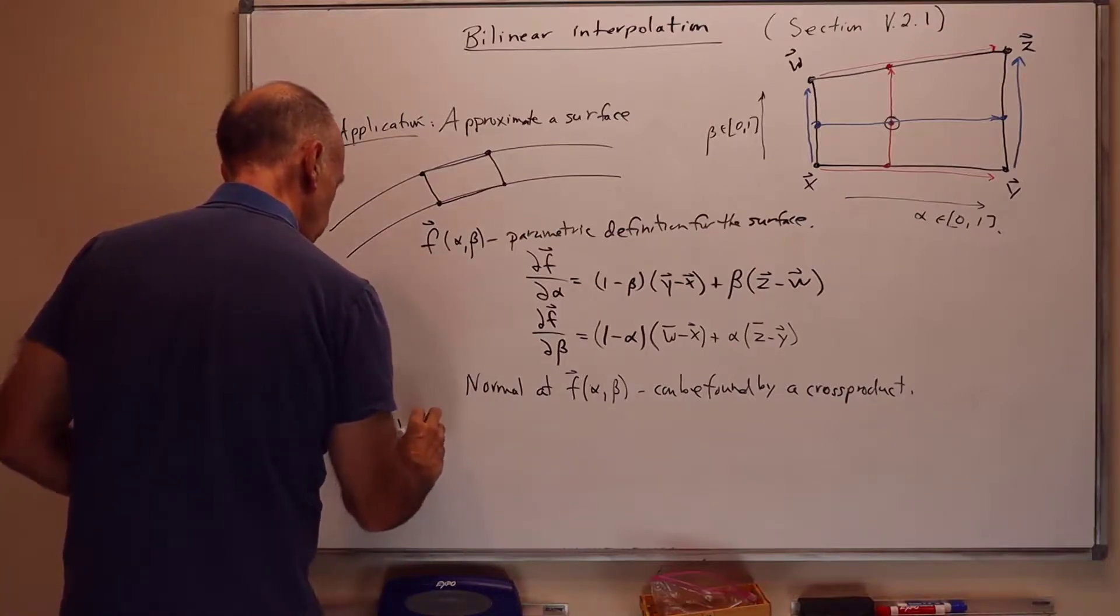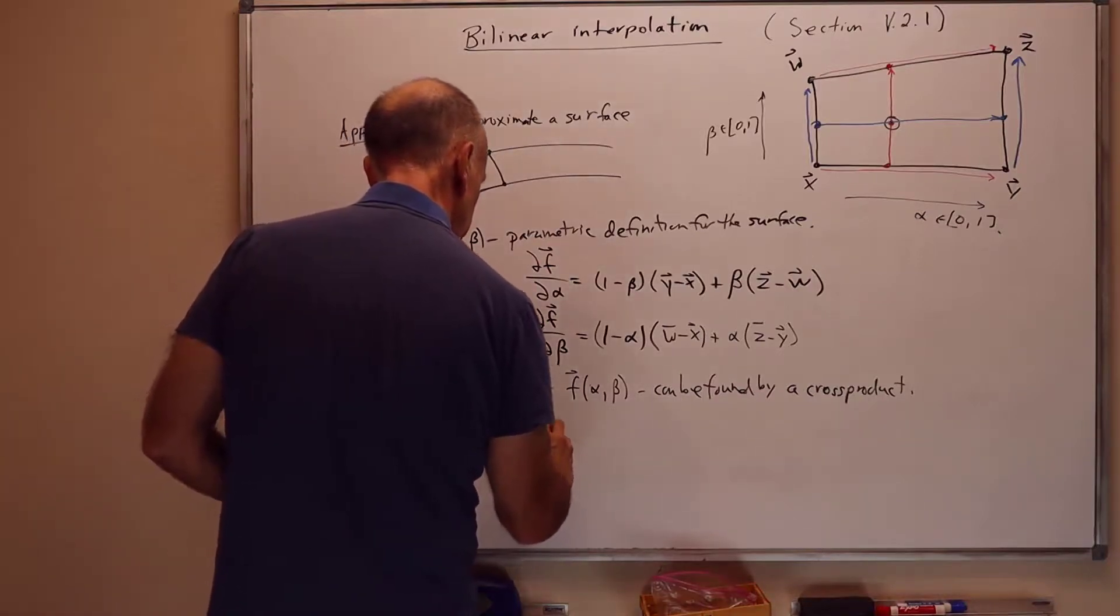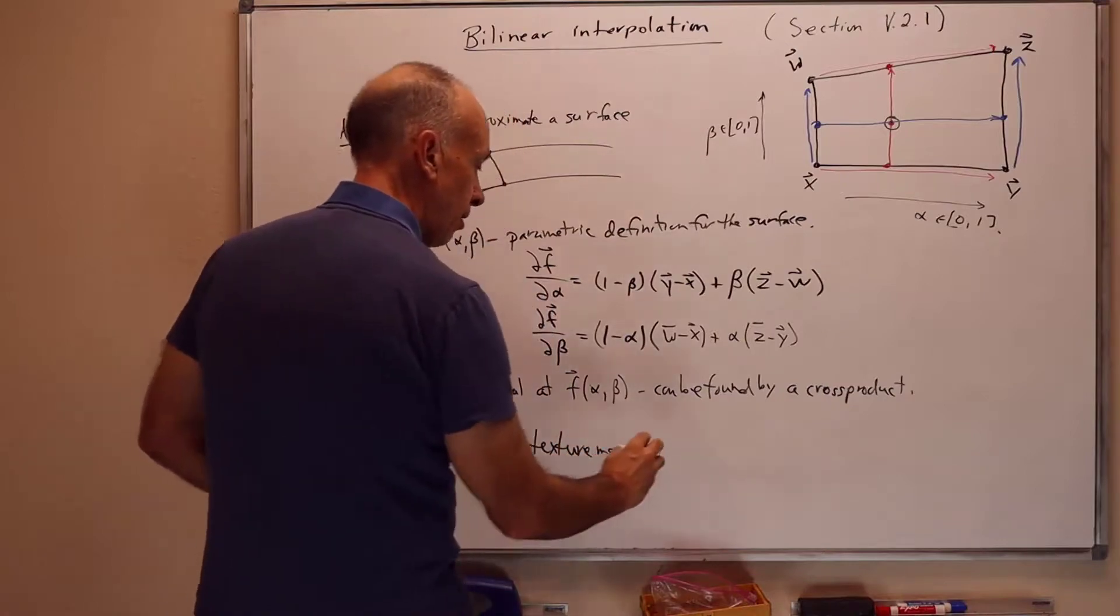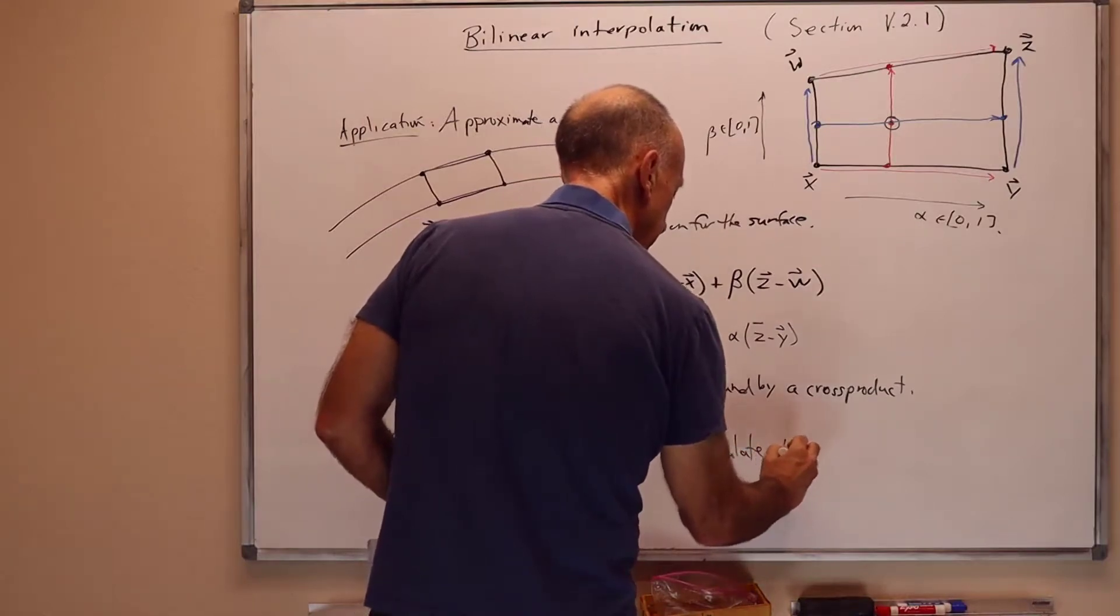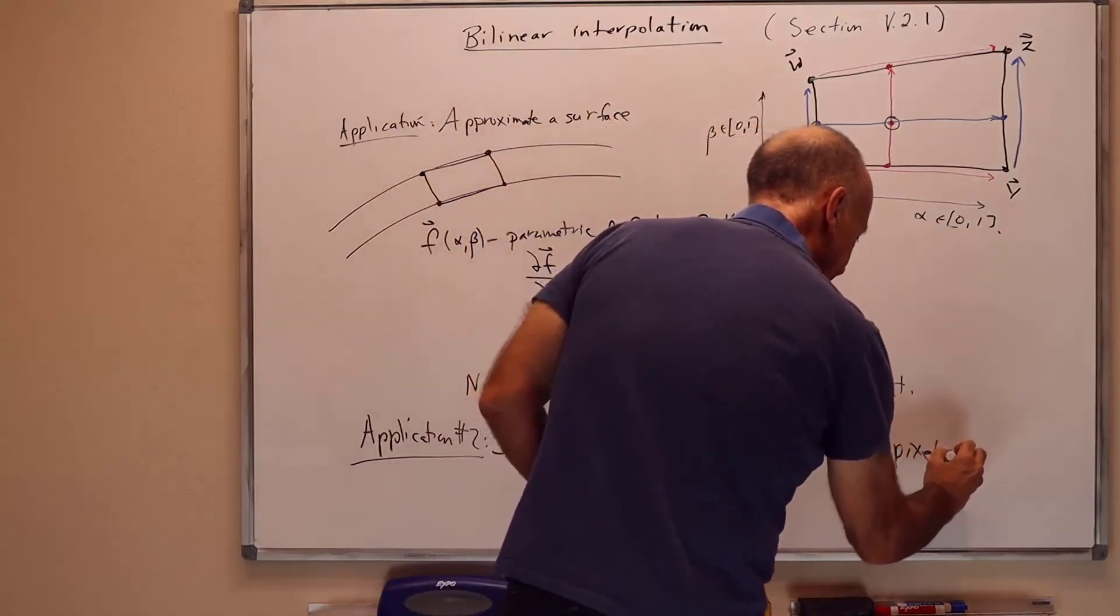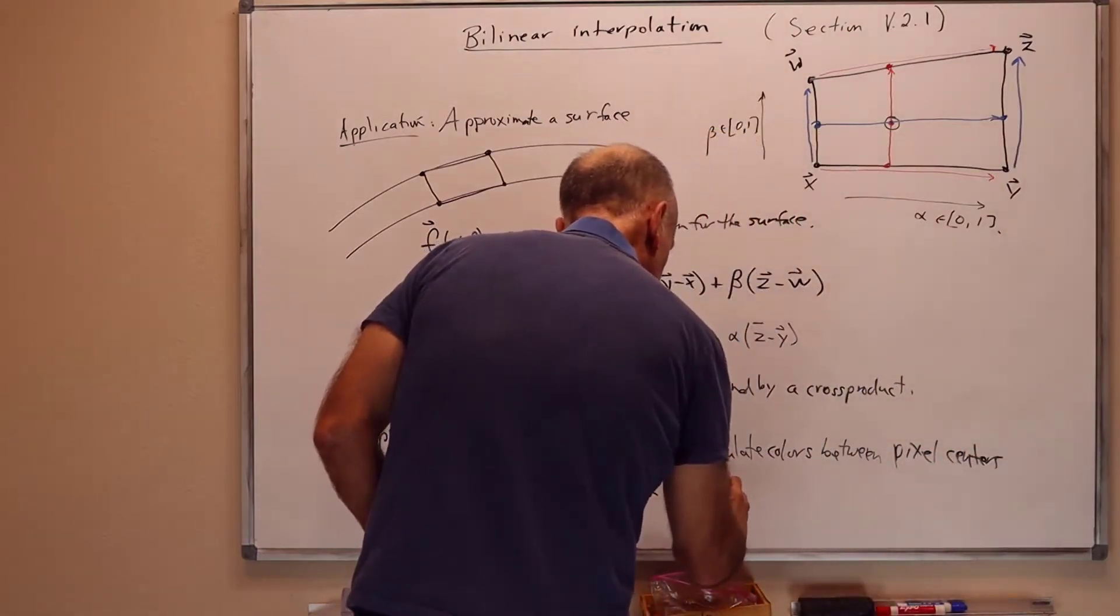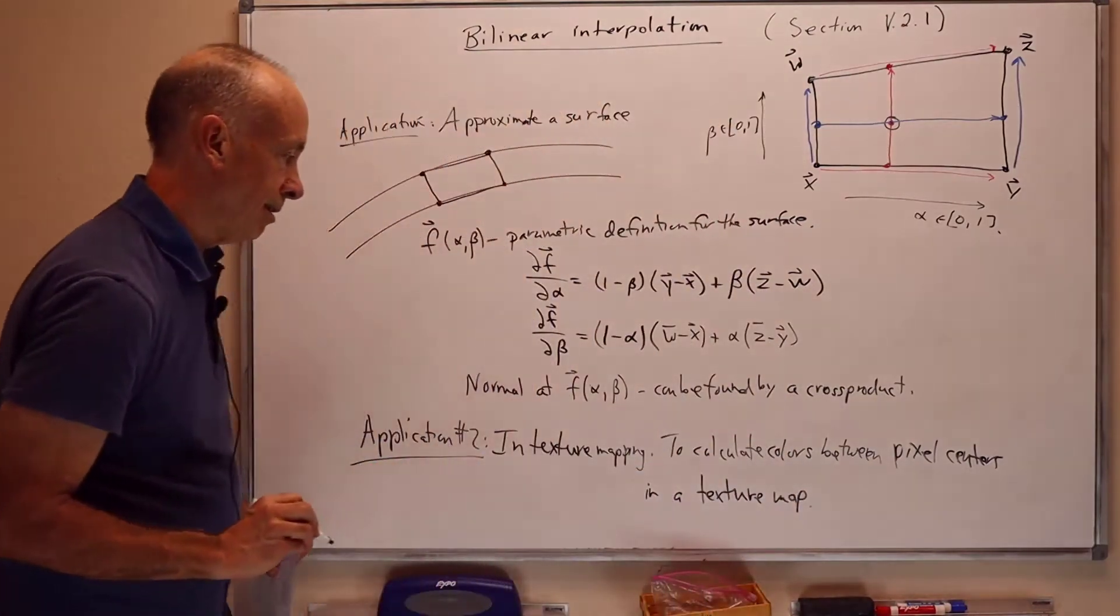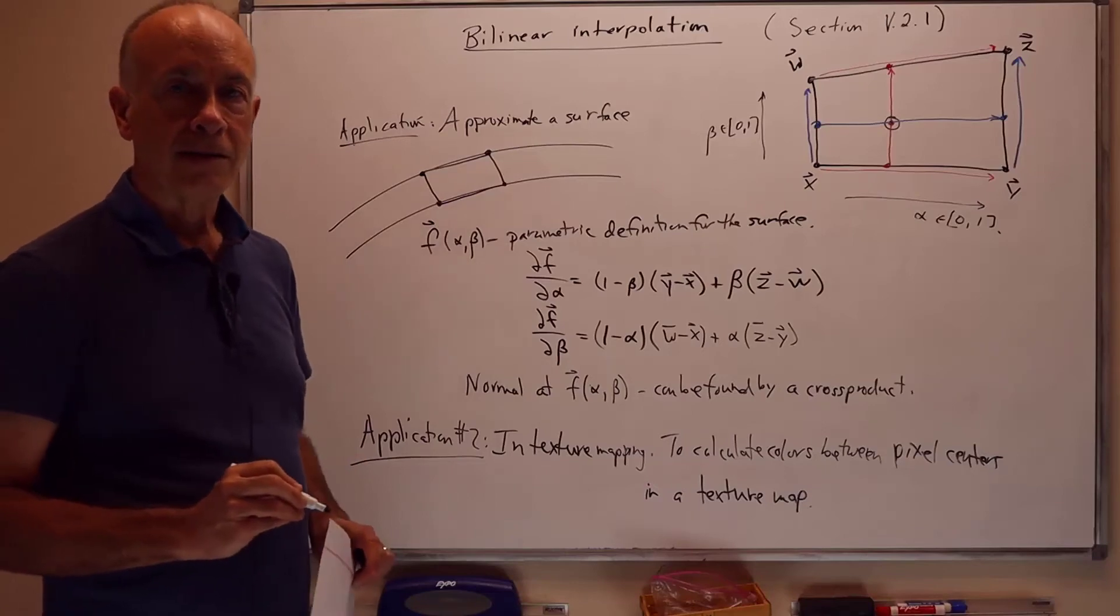Application number two comes up in texture mapping. And to calculate colors between pixels in a texture map. So between pixel centers in a texture map. So this is a thing that's built into OpenGL and it does for you automatically in fact. But I'll talk about this a little more in another presentation. So that's all for this presentation. Thank you very much.